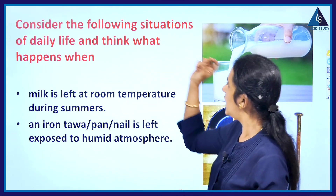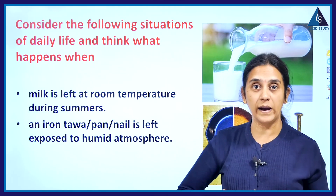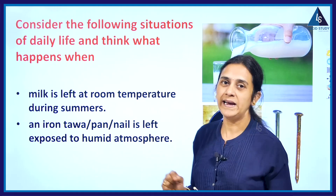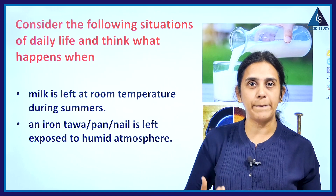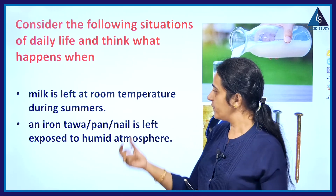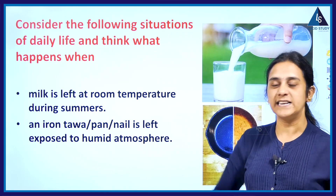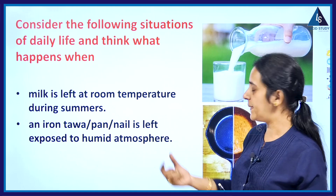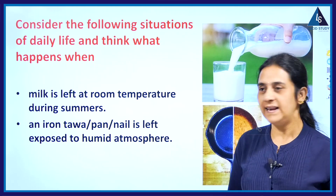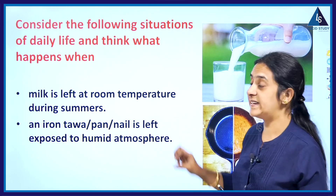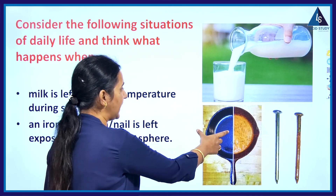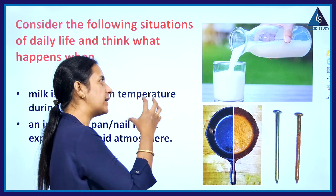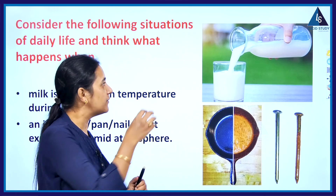Consider situations from daily life: when milk is left at room temperature during summer, it gets spoiled. When an iron tawa, pan, or nail is exposed to a humid atmosphere, it gets rusted. The iron nail rusting and the milk spoiling — these are examples of chemical reactions occurring within a substance.